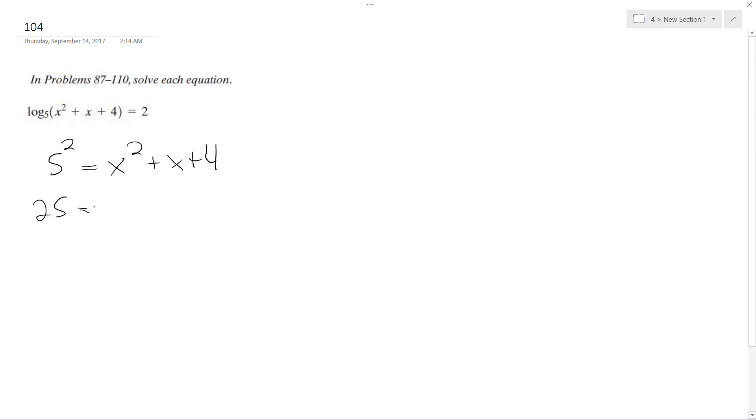It is easier to solve. So 25 is equal to x squared plus x plus 4. Subtract 25. So I get x squared plus x minus 21 equals 0.